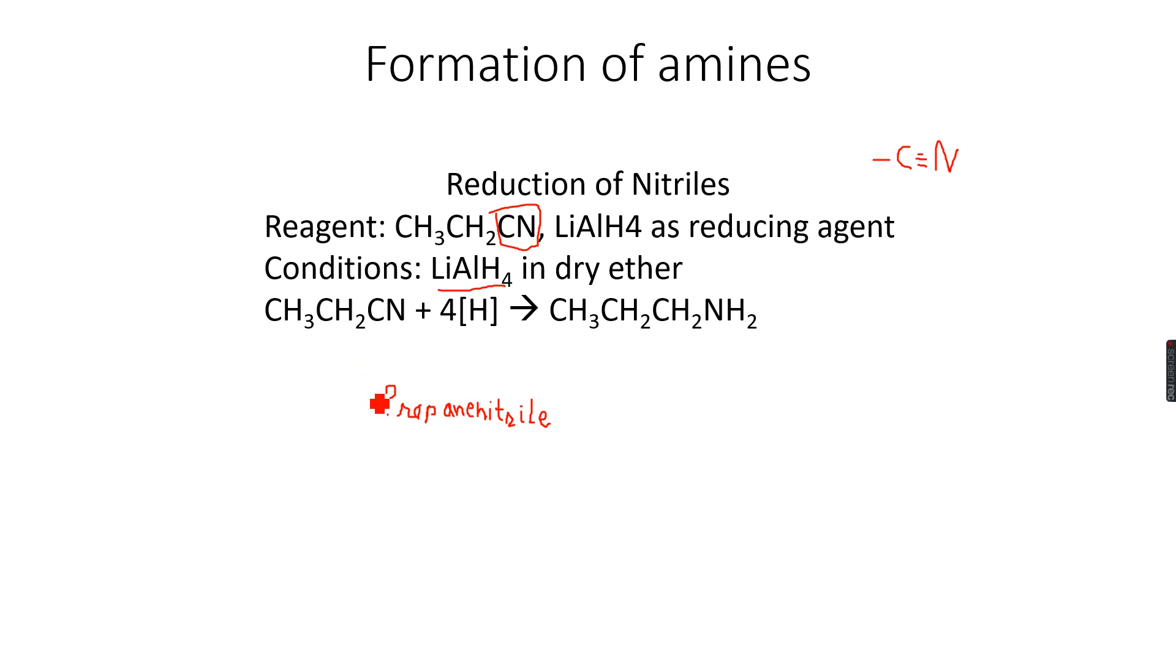So CH3CH2CN plus 4H because of the reduction, and it gives us propylamine - not propane, propylamine - because you have three carbon atoms. The ethyl group CH3CH2 remains unchanged in both, but the CN - the C gains H2 and the N also gains H2. Basically, the nitrile ion breaks to form CH2NH2, and hence we get propylamine from propane nitrile.